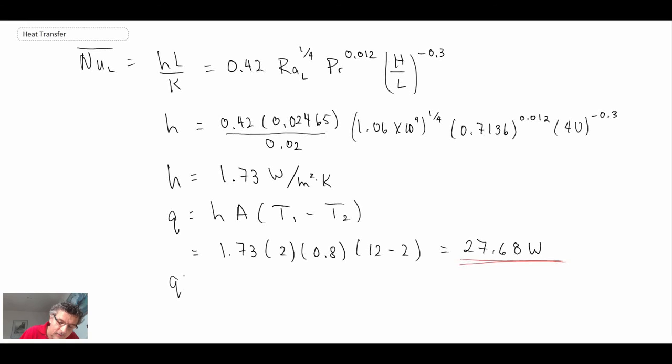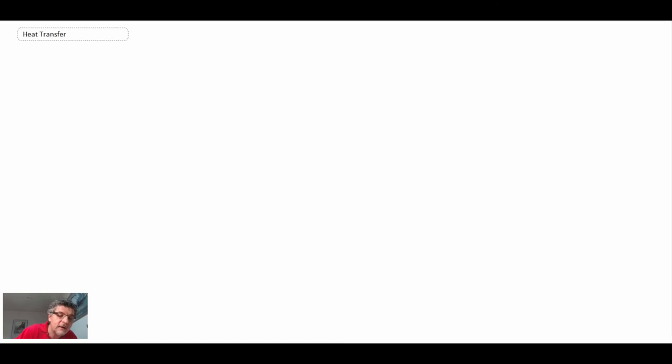So 27.68 watts is what is flowing through this window. Now, let's look at that Q double prime, or Q over A, 17.3 watts per meter squared. And we are now going to use that in determining the R value. So this is the first part of the problem, getting Q. The second part is the R value.